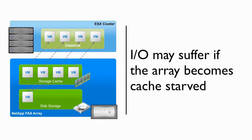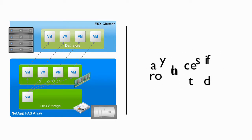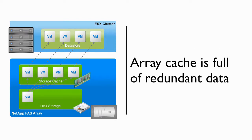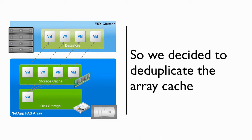All storage arrays implement cache as a means to improve performance. And as cache is a finite resource, should you become cache-starved, your performance will suffer. What many don't realize is that the cache in a storage array is also full of redundant data. NetApp engineers weren't satisfied with just deduplicating the storage footprint. We now deduplicate the storage array cache. What results is an exponential gain in efficiency and performance. By deduplicating the cache, we free up additional cache to serve additional workloads.